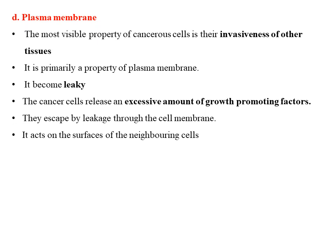Cancer cells often have extra as well as longer centrioles, which are absent in normal cells. Regarding the plasma membrane, the most visible property of cancer cells is their invasiveness into other tissues. This is primarily a property of the plasma membrane, which becomes leaky, allowing cell contents to spread to neighboring cells. The cancer cell can also release an excessive amount of growth-promoting factors, which escape through leakage in the cell membrane.